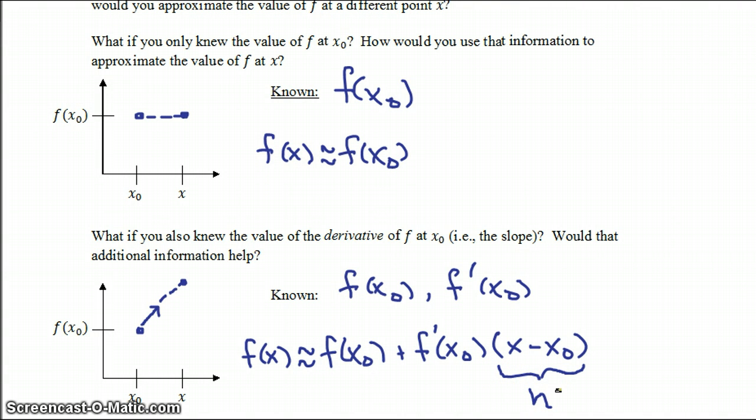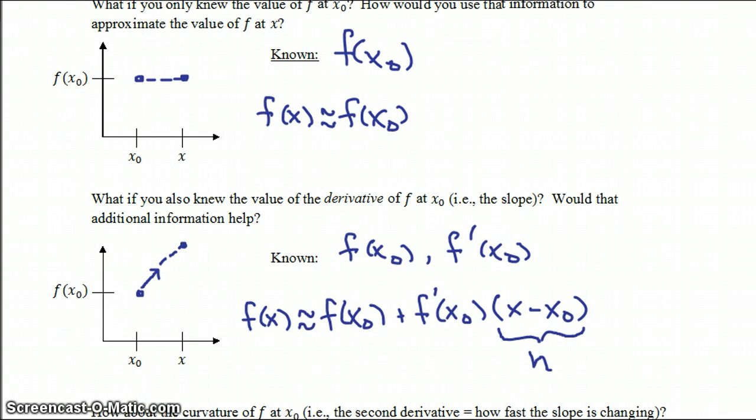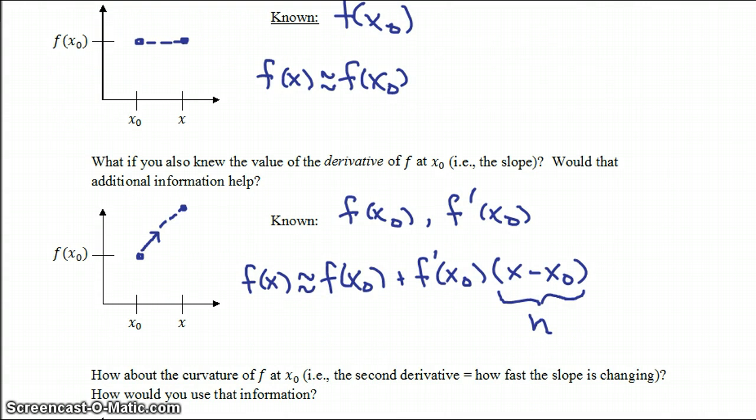That's actually a really good estimate of what f of x is going to be. Of course, it's going to get worse the further away from x0 that you have to go. This is actually a good estimate when h is small. But what would happen if we had a little bit more information of f at x0?